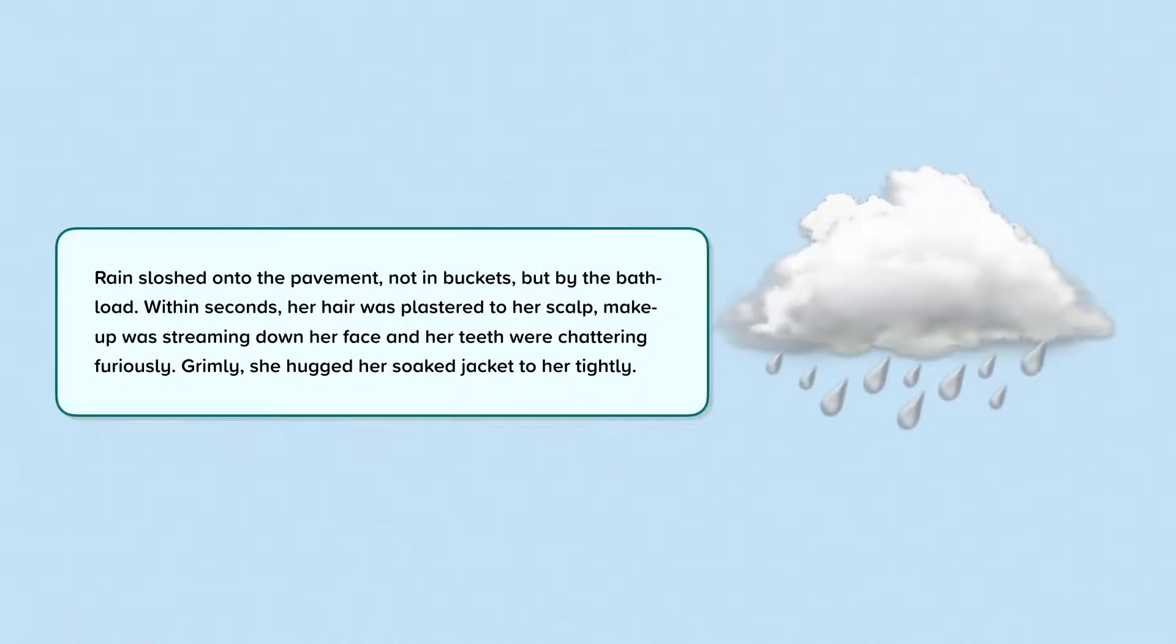This is the middle of a story, in which the character is feeling miserable. Rain sloshed onto the pavement, not in buckets, but by the bath load. Within seconds, her hair was plastered to her scalp. Make-up was streaming down her face, and her teeth were chattering furiously. Grimly, she hugged her soaked jacket to her tightly.